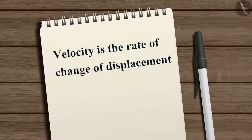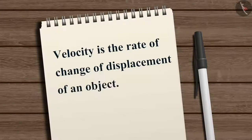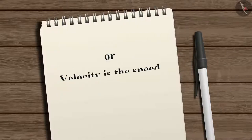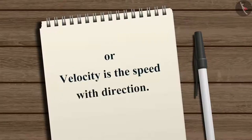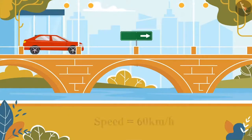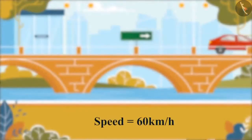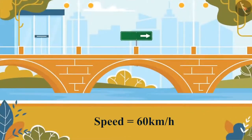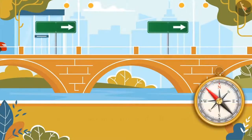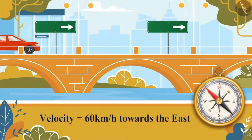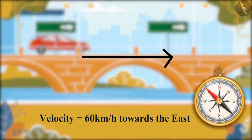Velocity is the rate of change of displacement of an object. Or simply, velocity is the speed with direction. So if a car is going at 60 km per hour, this is its speed. But when we say the car's speed is 60 km per hour towards the east, then it becomes velocity.